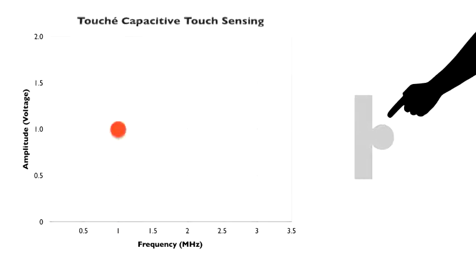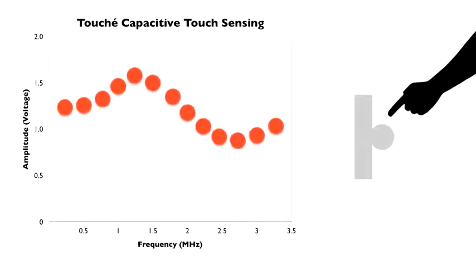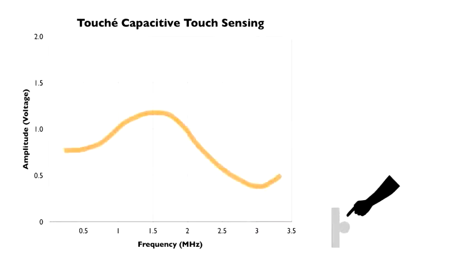Touche, in contrast, sweeps over a range of frequencies, sampling the return voltage many times. This builds up a capacitive profile, which contains considerably more information.